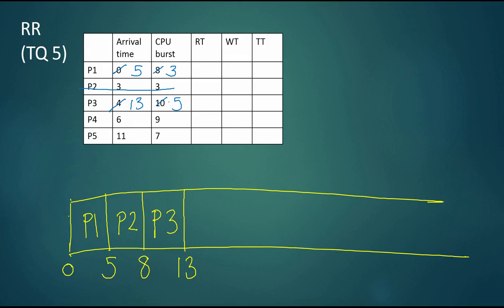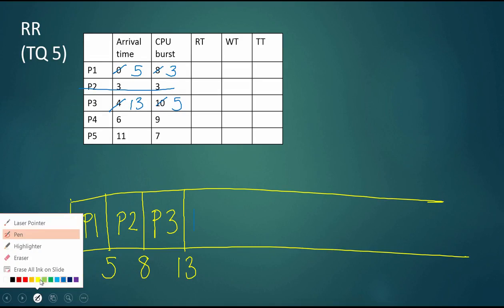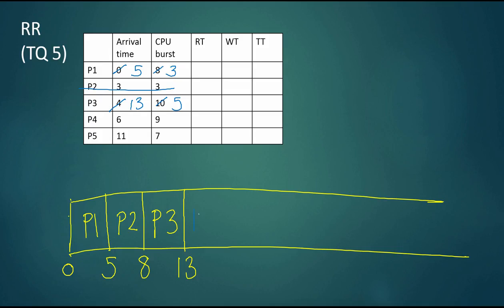The current time is 13, and you need to be careful here because P1 actually arrived in the ready queue before P4. P1 got there at time five, which is an earlier arrival time than P4, so the next to go is P1. P1 has three time units of CPU burst left, so at time 16, P1 will be done.